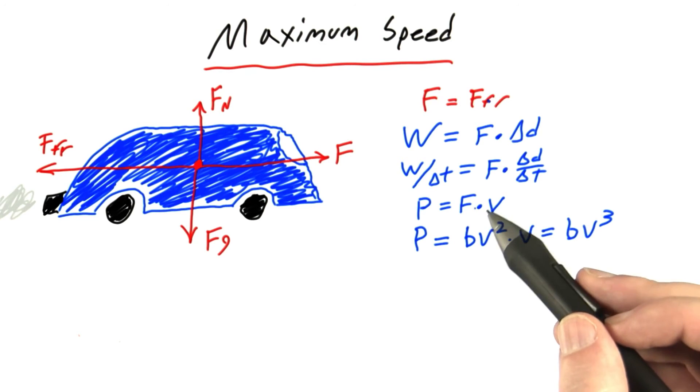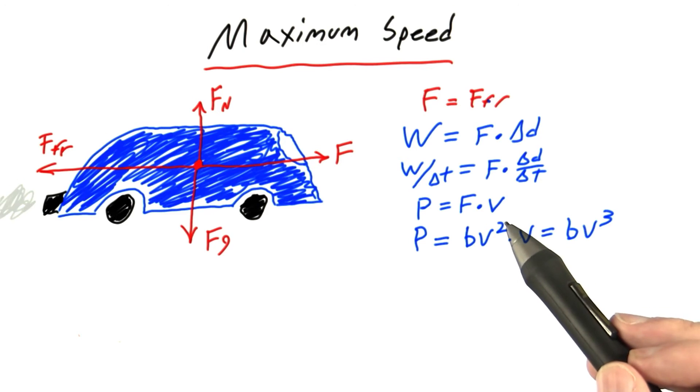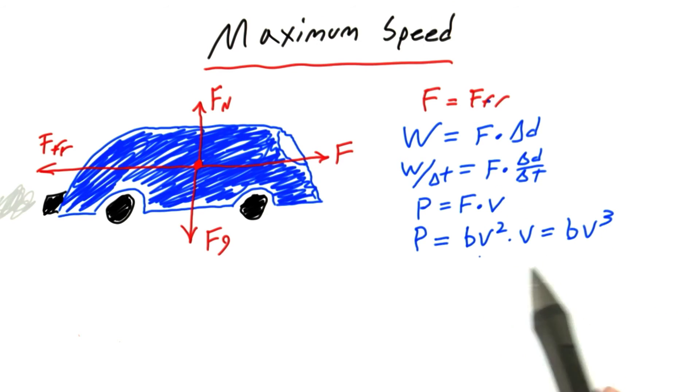Now what's this f equal to? Well we said earlier that this f has to perfectly balance out the frictional force. So we know that the frictional force is equal to bv squared, so we can just plug that in. And multiplying that by the v, we get that the power is equal to bv cubed.